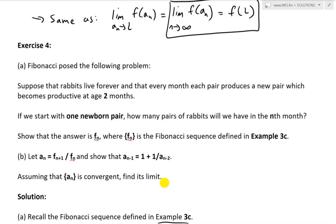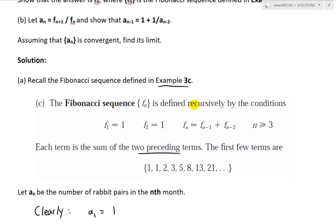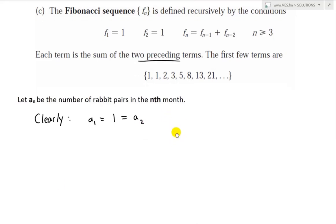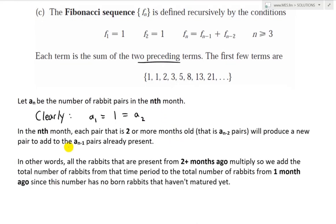At month 2, because rabbits live forever but become productive at age 2 months, the original newborn pair has not yet reproduced. So A_2 also equals 1 — there is still just one rabbit pair. Now in the nth month, each pair that is 2 or more months old — that is A_{n-2} pairs from 2 months ago — will produce a new pair.